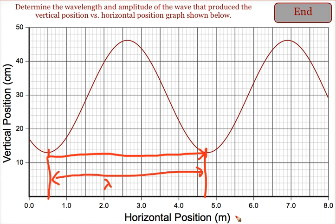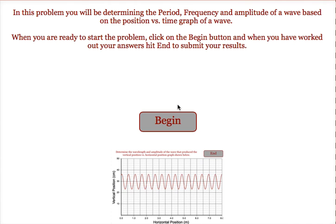Now notice, this is a graph of vertical position versus horizontal position. There are some times where you're going to get a graph of position versus time, like this one.